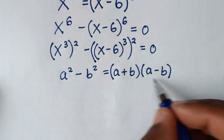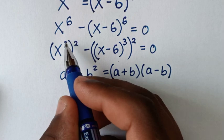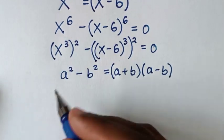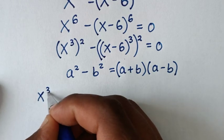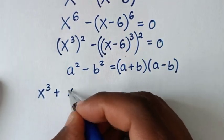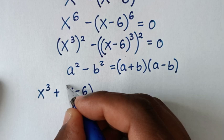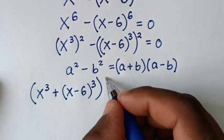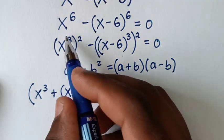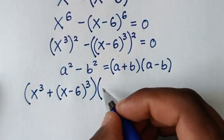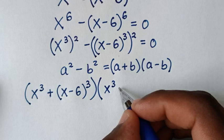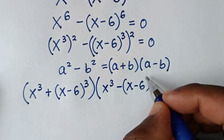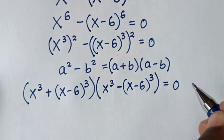Applying a plus b times a minus b: the first bracket is x power 3 plus x minus 6 bracket power 3, and the second bracket is x power 3 minus x minus 6 bracket power 3, and this is equal to 0.